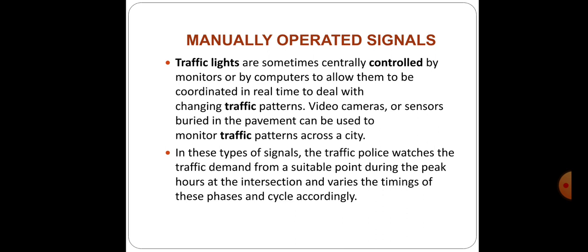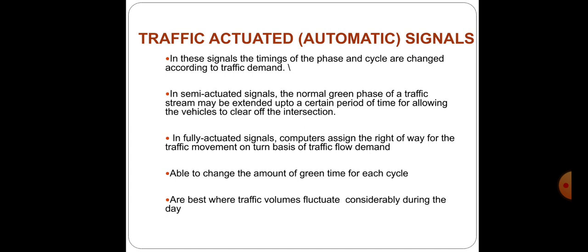Moving on to the manually operated signal: here a traffic police officer watches the traffic demand from a suitable point, especially during peak hours at road intersections. The signal timings vary based on the traffic phases and cycles accordingly. Manually operated signals are operated from a salient point very near to the intersection, and the signal phases may be varied depending on the traffic demand at a particular point in time.